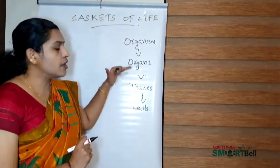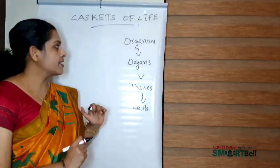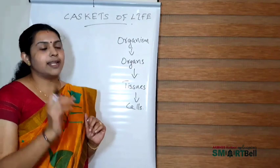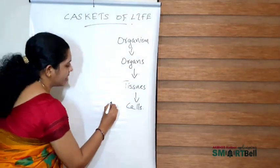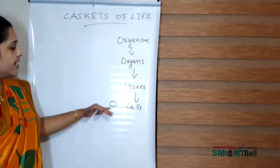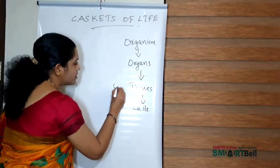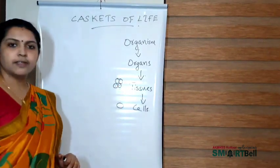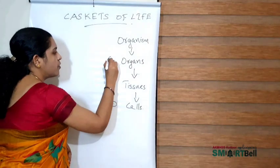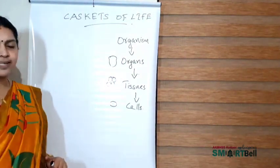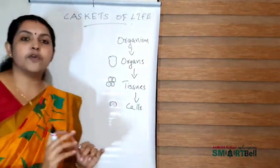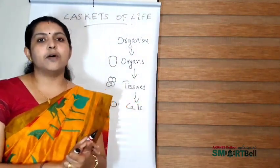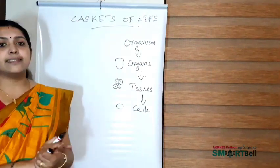The cells join together to form tissues, the tissues join together to form organs, and the organs join together to form an organism. So the order is: cell → tissue → organ → organism.